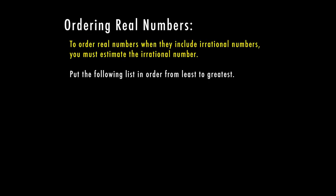When you're ordering real numbers, if it includes an irrational number, you must estimate that irrational number before you can put the list in order. And we're going to put this list in order from least to greatest. So this is going to include the square root of five, two and a half, the square root of three, and 12 sixths. Now a couple of these are pretty simple as far as being able to compare them to the other numbers. We definitely want to get all the numbers into decimals.